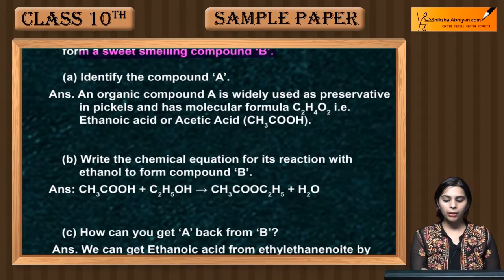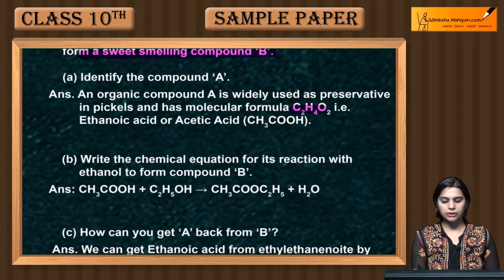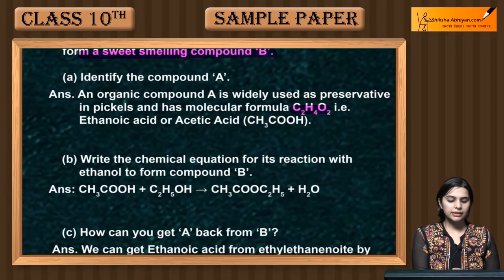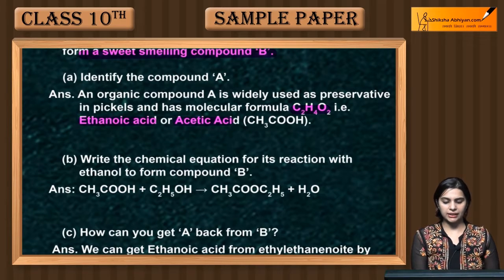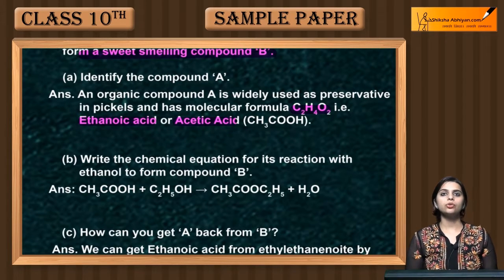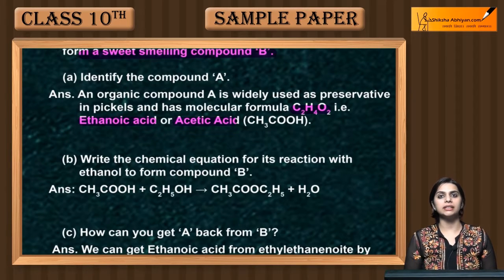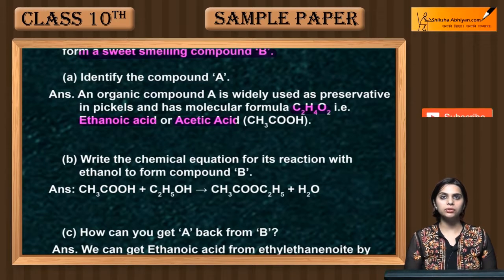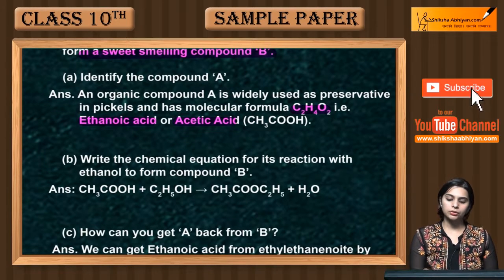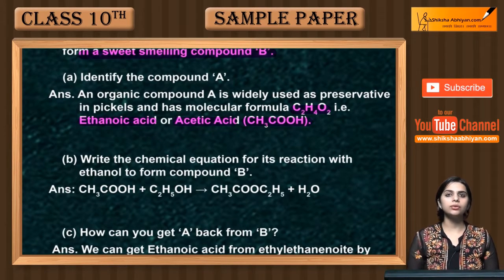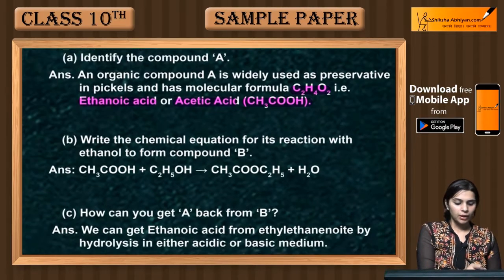An organic compound A is widely used as a preservative in pickles and has molecular formula C2H4O2 — that is ethanoic acid or acetic acid. What we use for preservation in pickles is called ethanoic acid or acetic acid. We also call it vinegar. The formula is CH3COOH.